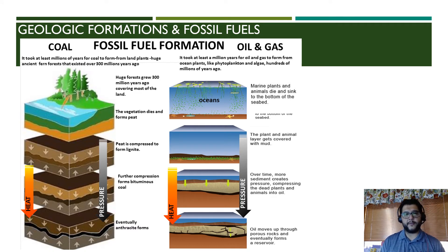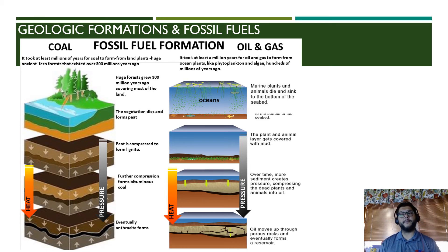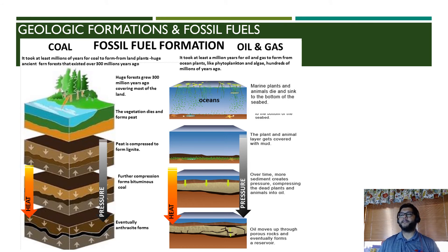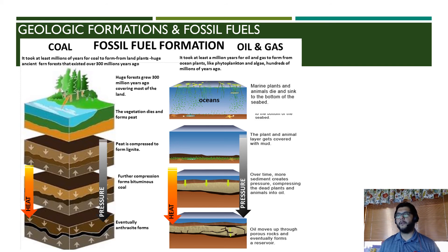From lignite it forms bituminous coal, and eventually given enough heat and time it'll form anthracite. Now sometimes if this is around a liquid — like a lake, pond, or river — it may not only form coal but might also form some oil and natural gas. But typically we see oil and gas in abundance from ocean sources. Algae and plant materials get pushed down underneath the water, they decay, and the pressure and heat causes those dead plants and animals to become oil.